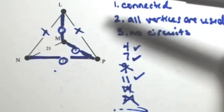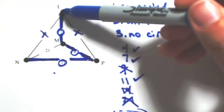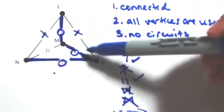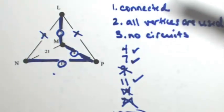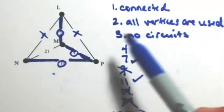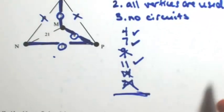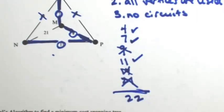So let's see if everything works. First of all, it is connected because I can get from L to M to P to N. They'll all be connected. All the vertices have an edge coming out of them and there's no circuits. So this is our minimum cost spanning tree using just the 4, the 7, and 11. So this has a cost of 22.